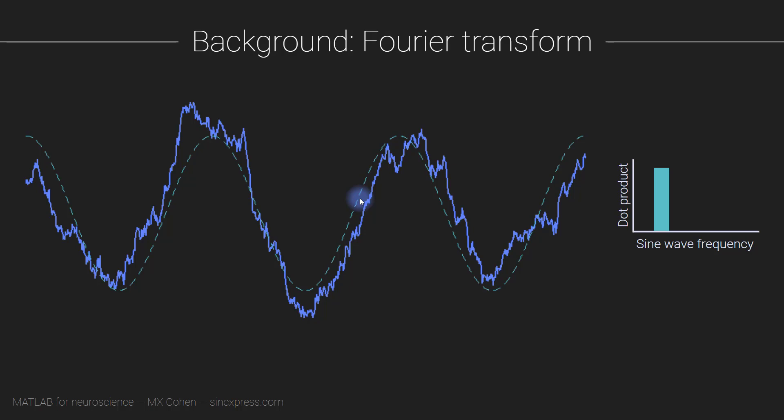The next step is to repeat this same process, but using a sine wave with a different frequency. So this sine wave is a bit faster, and you can see that it doesn't really look like the signal that much. So the dot product is much smaller. So then of course, you repeat this for another sine wave frequency, and so on and so on.